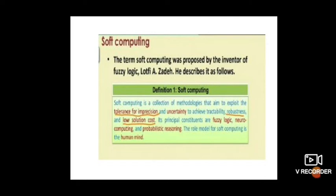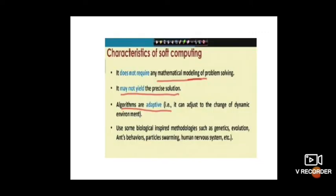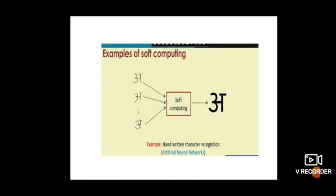The examples of soft computing are fuzzy logic, neural networks, and genetic algorithms. The characteristics of soft computing are: it does not require any mathematical modeling — which is opposite to hard computing. It may not yield a precise solution. Algorithms are adaptive, meaning they have learning capability. Soft computing uses biologically inspired methodologies such as genetics, evolution, ant behavior, particle swarming, and the human nervous system.